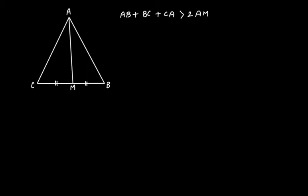So how will you do this? First focus on this part of the triangle. In triangle ACM, CA plus CM is greater than AM. How? Sum of the lengths of any two sides of a triangle is greater than the third side, right?